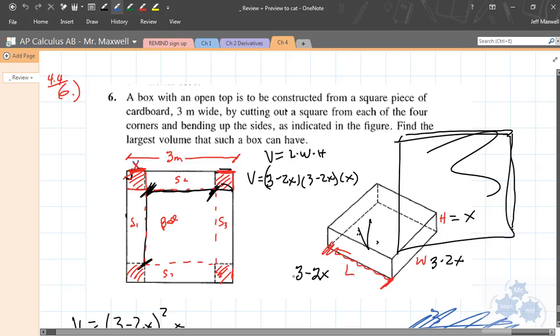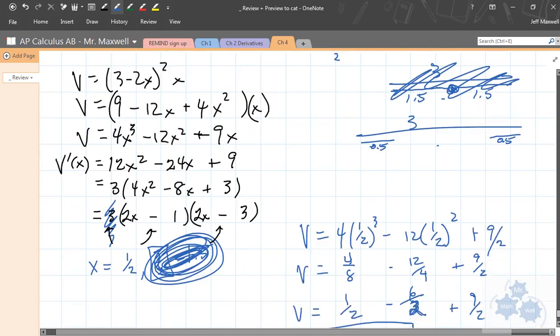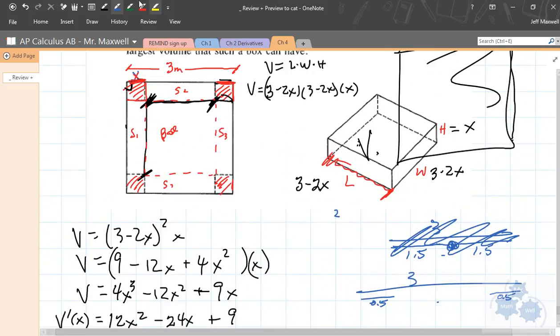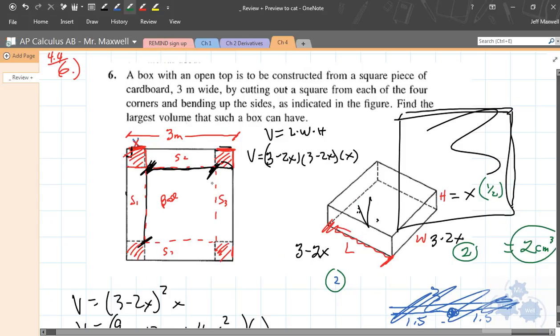If they asked you for the dimensions, then you could easily find that. 3 minus 2 times 1 half, so that's going to be 3 minus 2 times 1 half is 3 minus 1, so that's going to be 2. It's not right because I didn't finish this, but this 3 minus 2 times 1 half, this is a length of 2, this is a length of 2, and this is a height of 1 half. So you multiply those together, 2 times 2 is 4, times 1 half is 2 centimeters cubed. That's right, that's the volume, yep. And the dimensions are length of 2, width of 2, height of 1 half. So there's your 4.4 number 6, that's how you do that kind of question. Thank you.